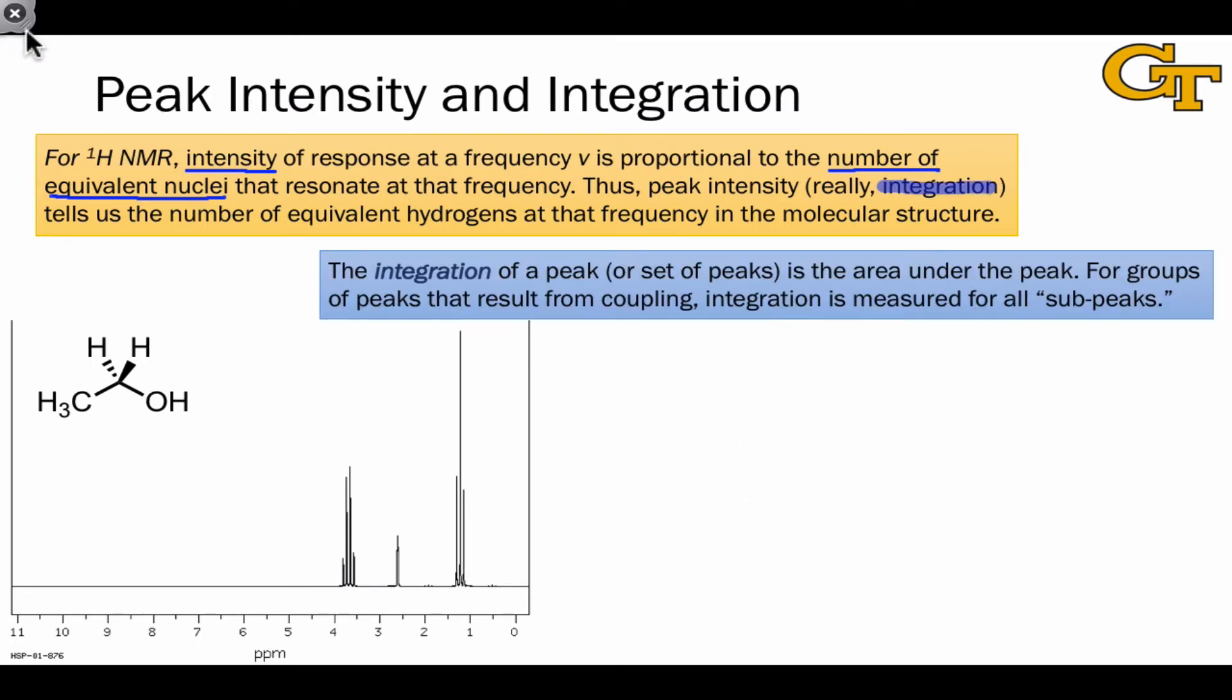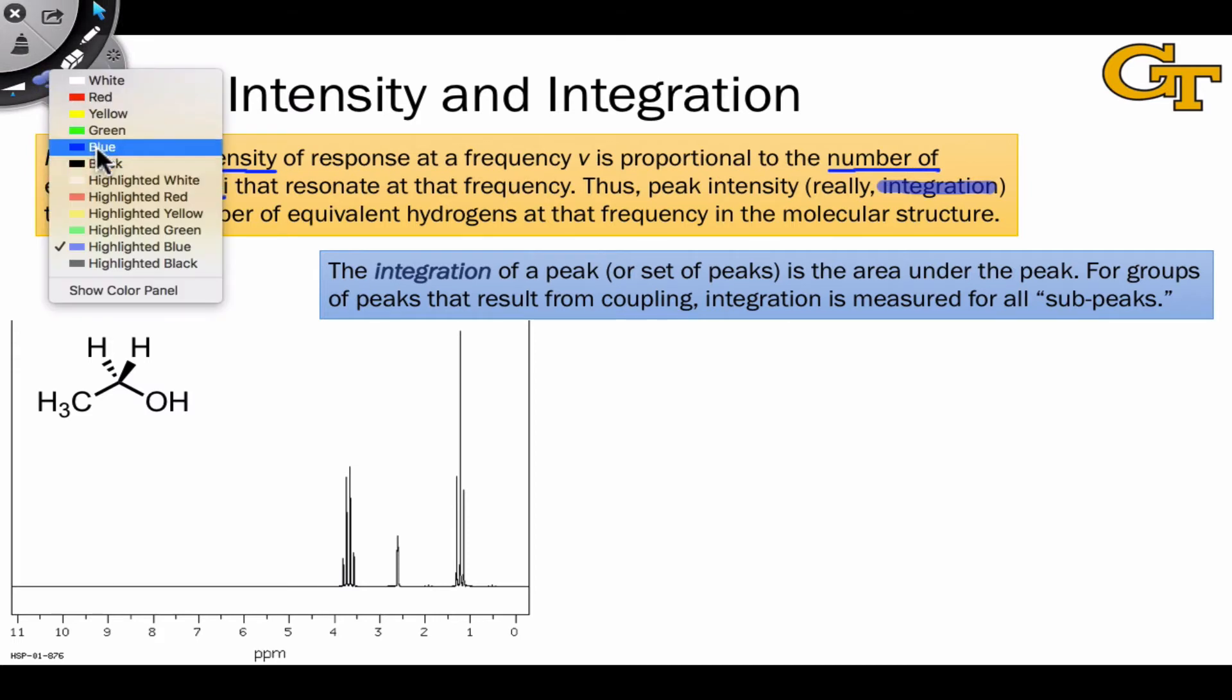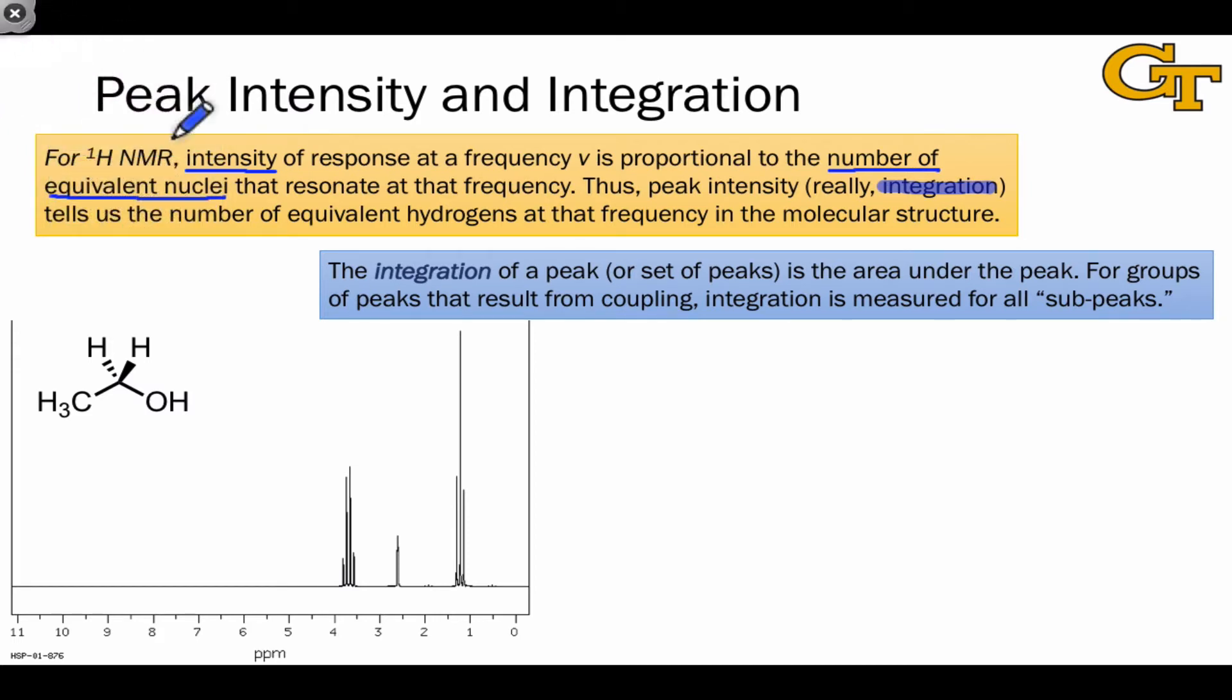Integration is defined as the area under a peak, and you see it typically in NMR spectra as an S-shaped curve above or sort of coincident with each peak. What that curve is showing you is how the area under the curve changes as we move along from left to right through the signal. So, for example, this signal here, we would see an S-shaped curve with some bumps each time we hit a sub-peak. There are four bumps because there are four sub-peaks within this signal.